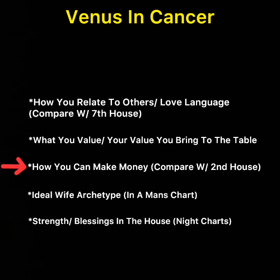In a man's chart, in terms of the ideal wife, you need a woman who's about family — it's that simple. You need a woman who's very nurturing and healing, who can cater to your needs. Since you value home and family, you may also like a woman who embodies that housewife energy.